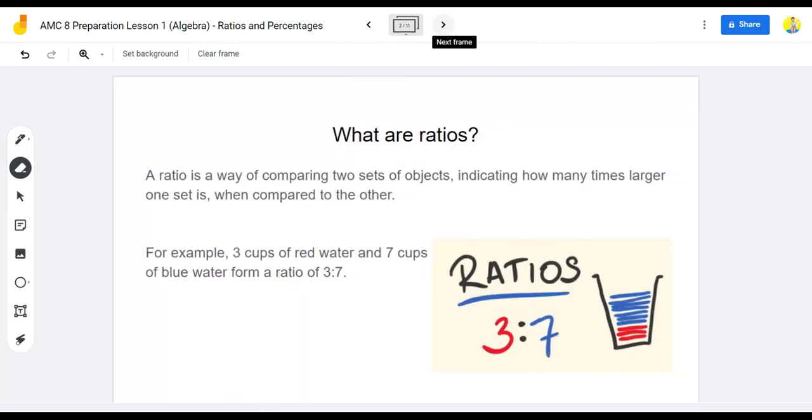What are ratios? A ratio is a way of comparing two sets of objects, indicating how many times larger one set is when compared to the other. For example, three cups of red water and seven cups of blue water form a ratio of 3 to 7.